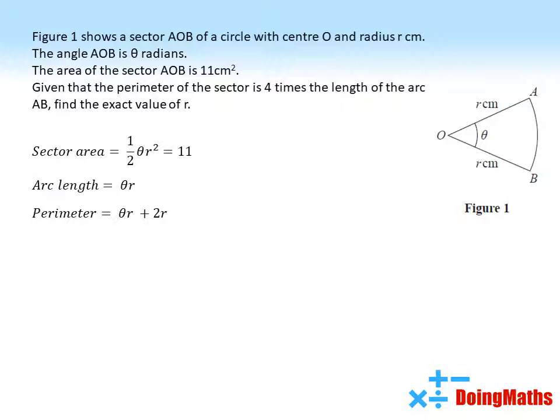Now we're told in the question that the perimeter of the sector is 4 times the length of the arc. So the perimeter theta R plus 2R equals 4 theta R, the arc length. We can simplify this by dividing through by R to give us theta plus 2 equals 4 theta, which gives us 3 theta equals 2, theta equals 2 thirds.